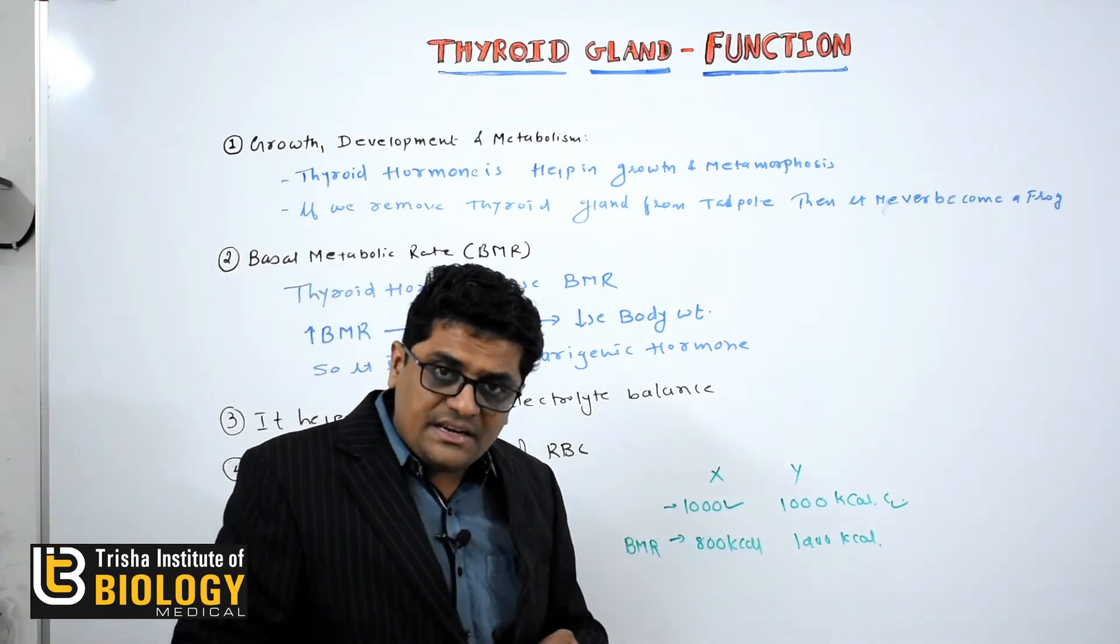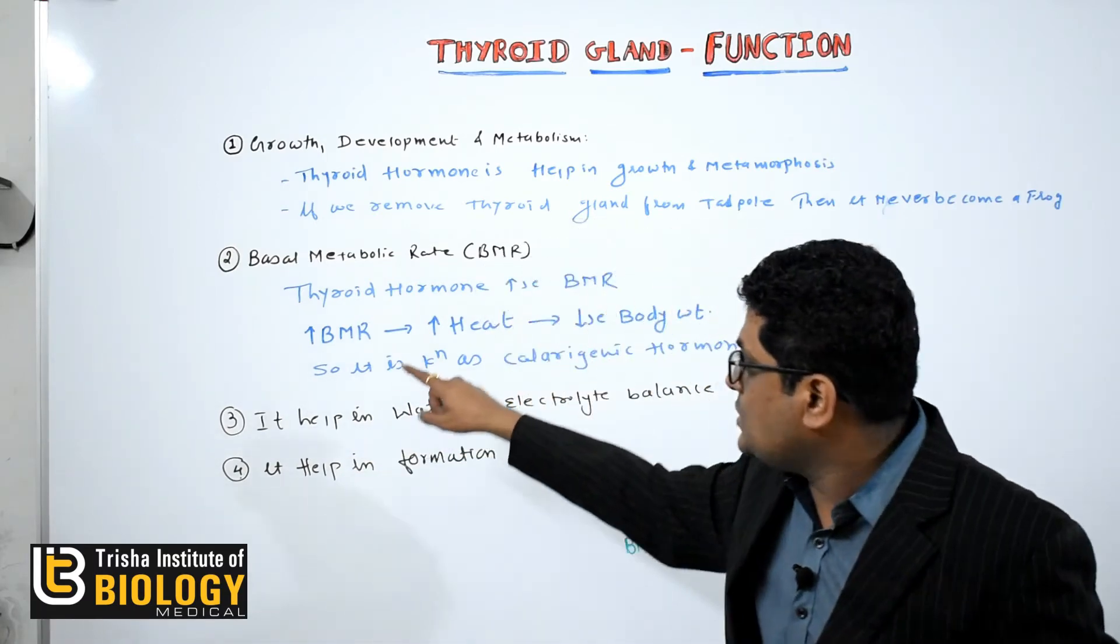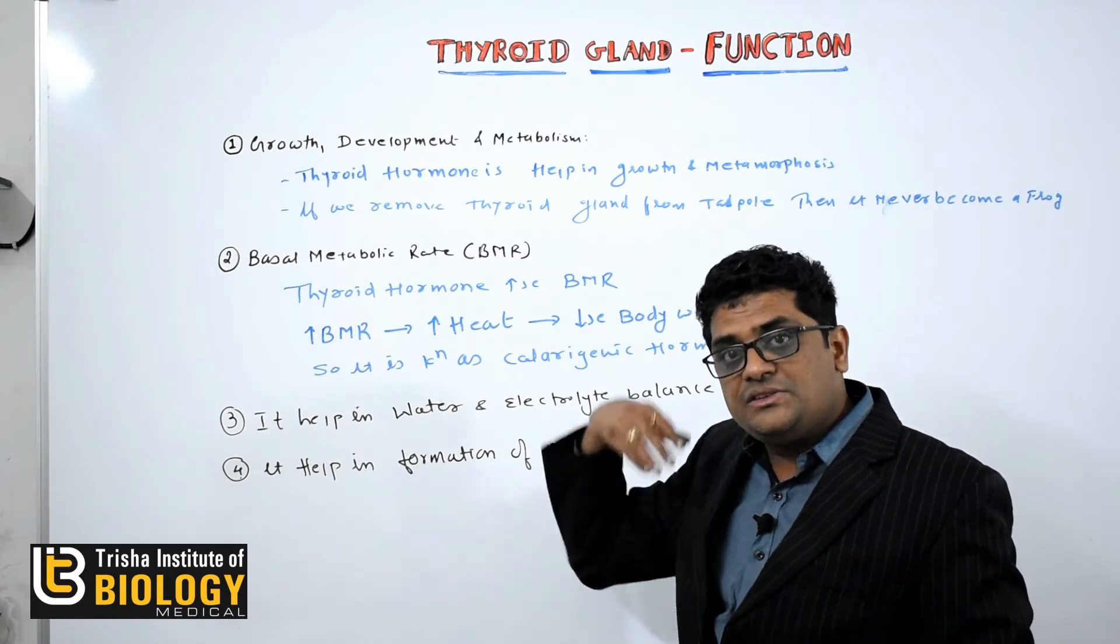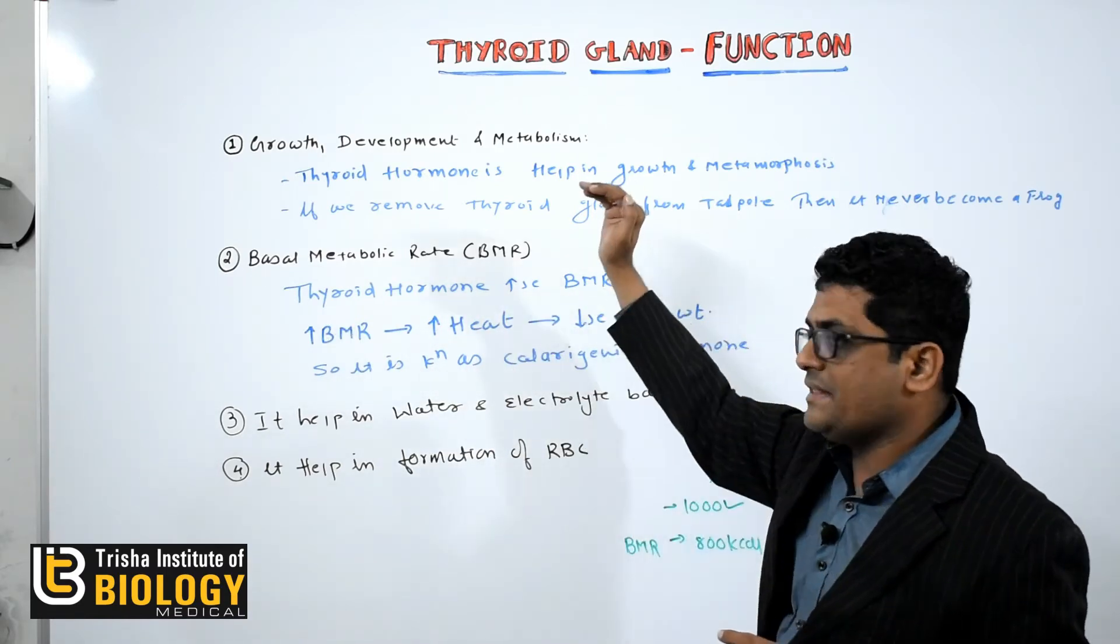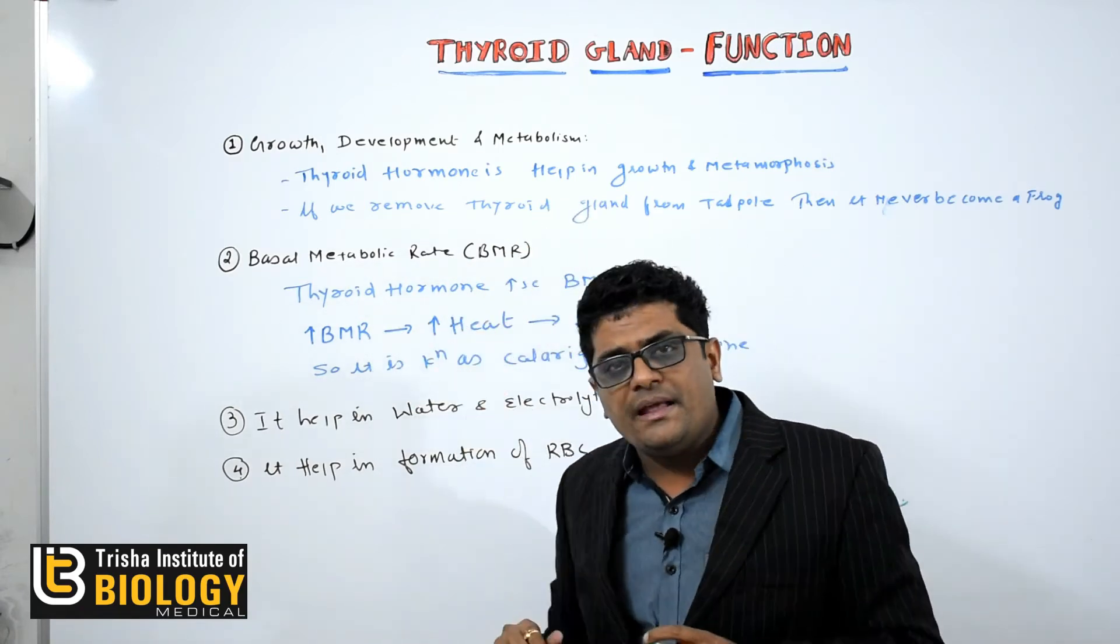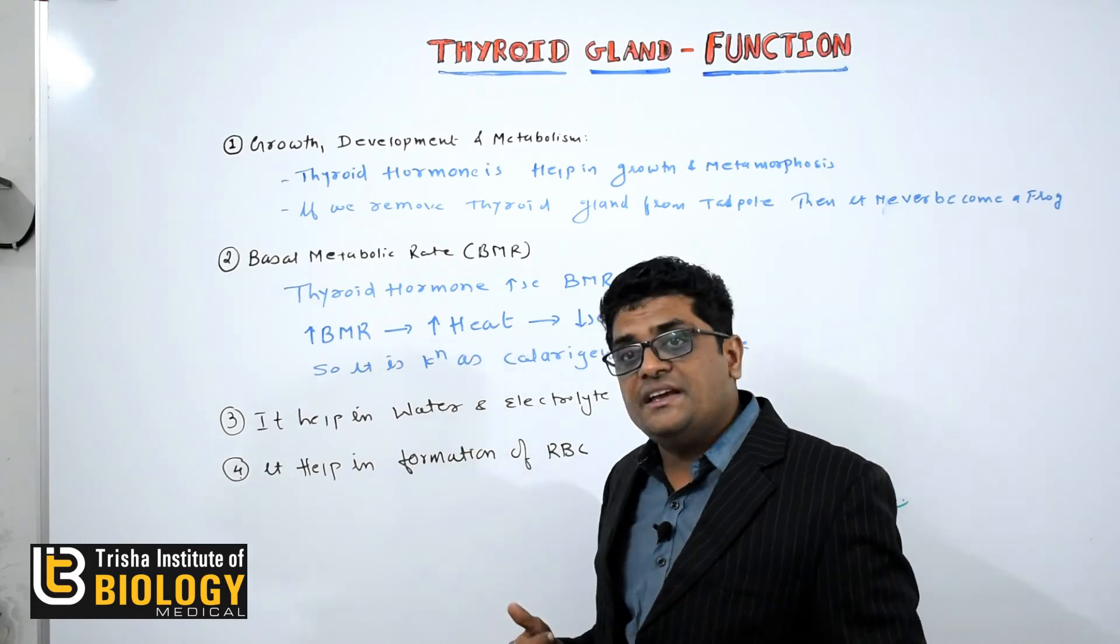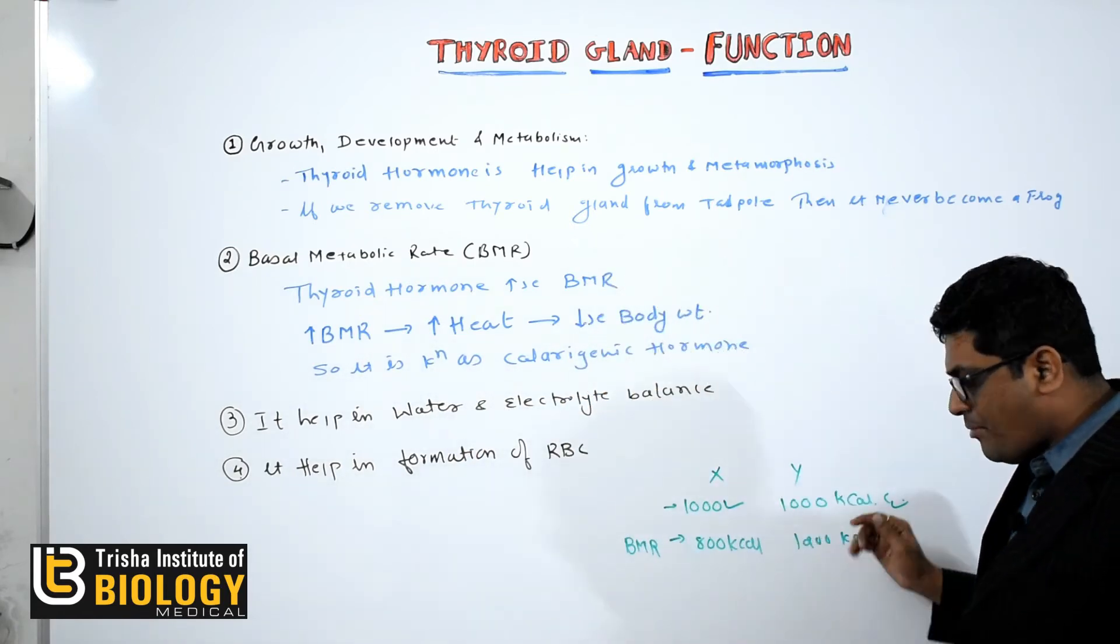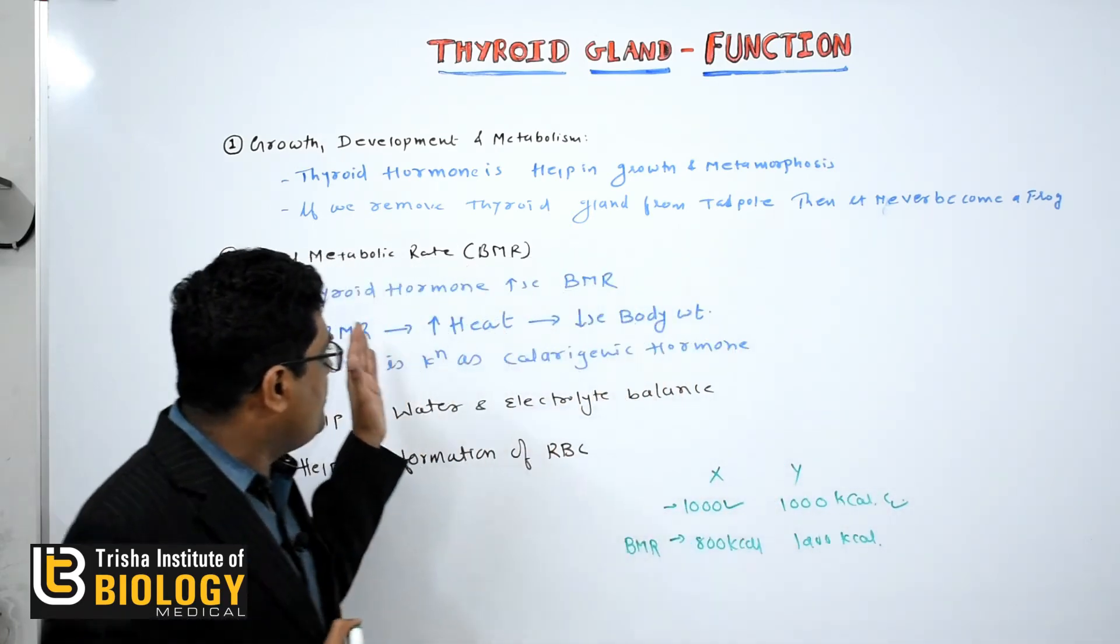Thyroid hormone increases your basal metabolic rate. If basal metabolic rate increases, metabolism will increase, generate heat and decrease body weight. Jitna basal metabolic rate badega, body weight utna kam hooga. So this is all about the basal metabolic rate.